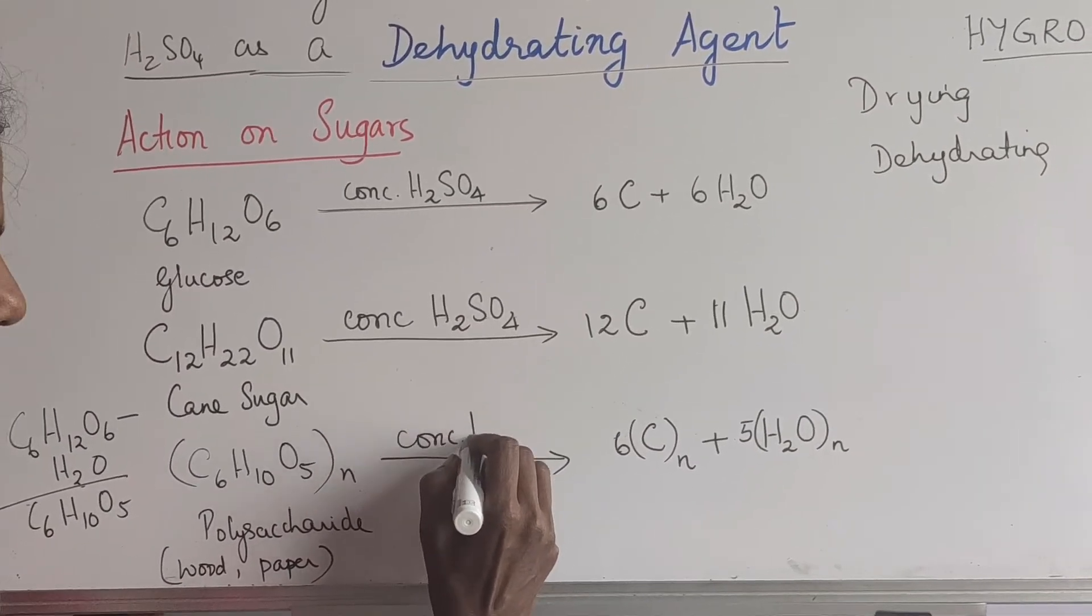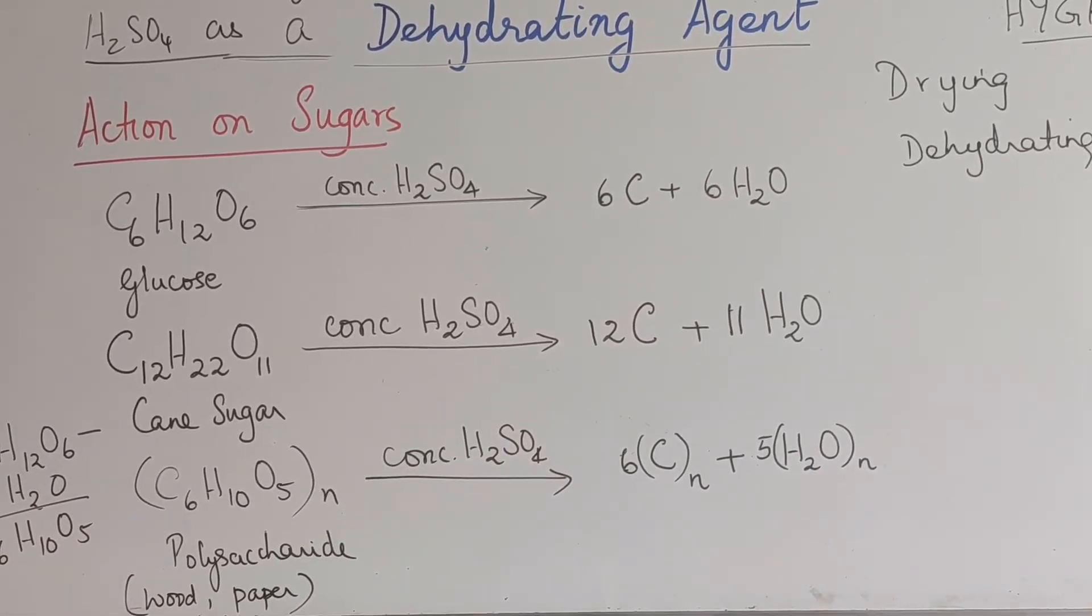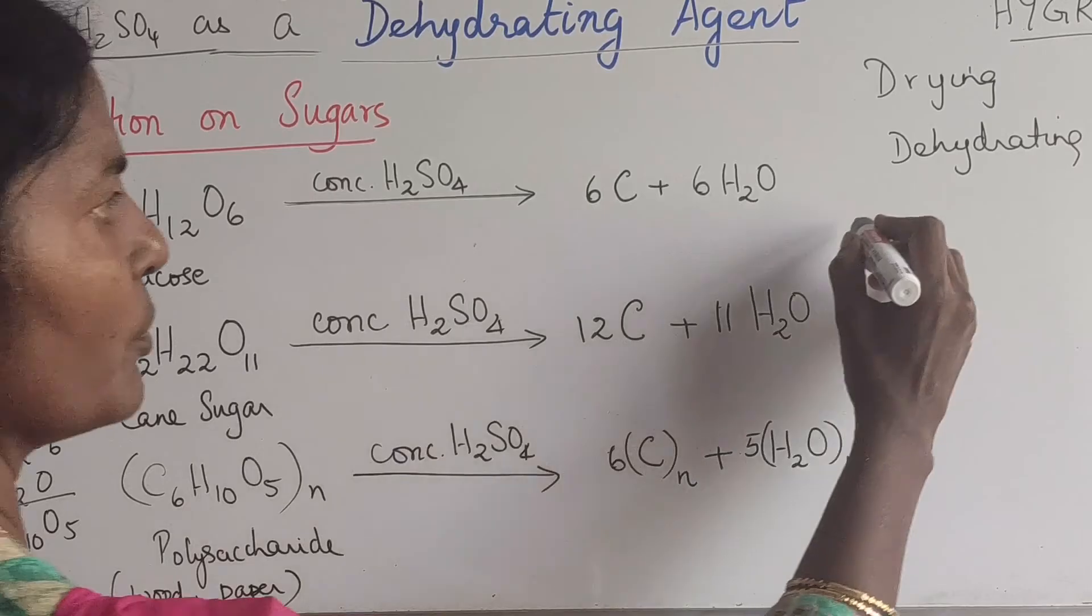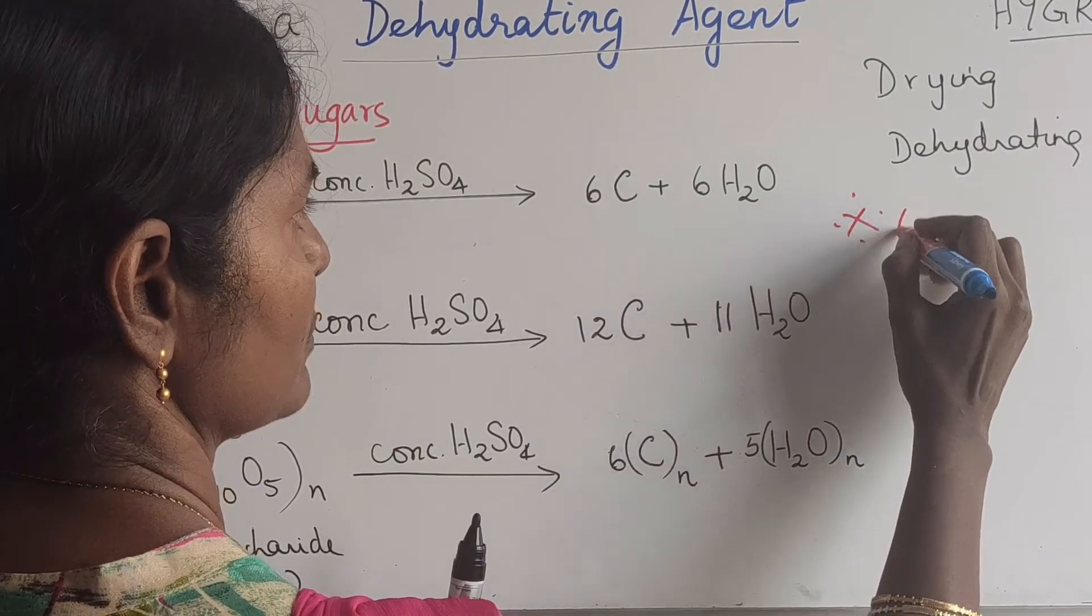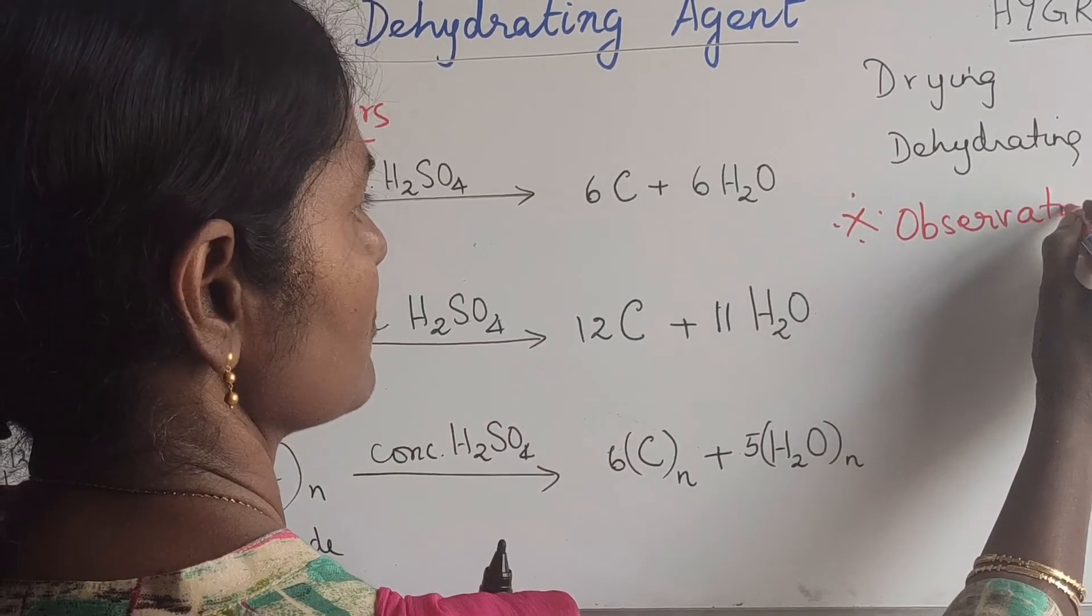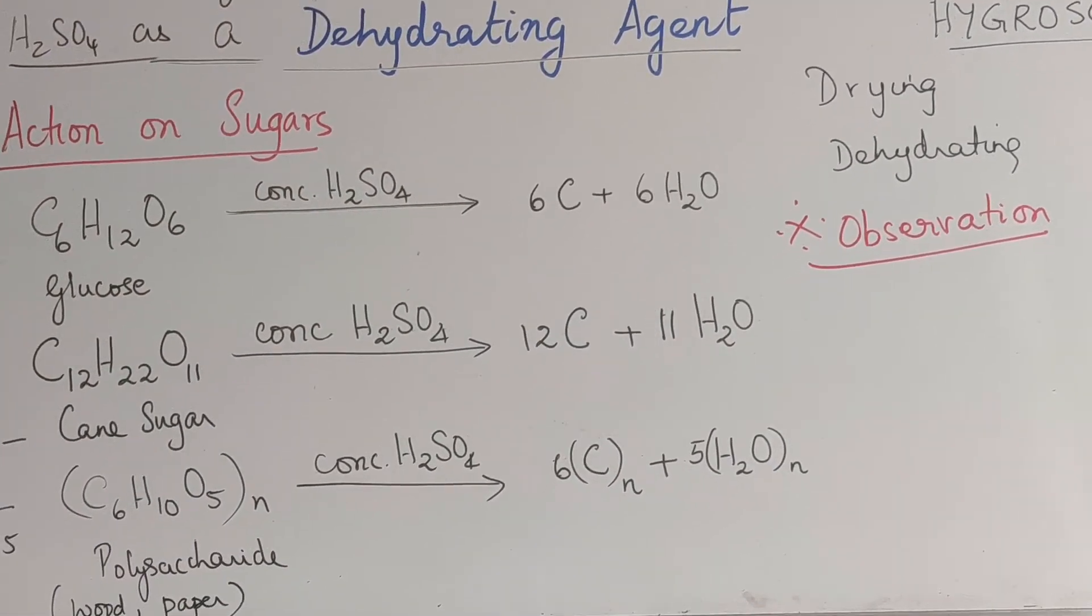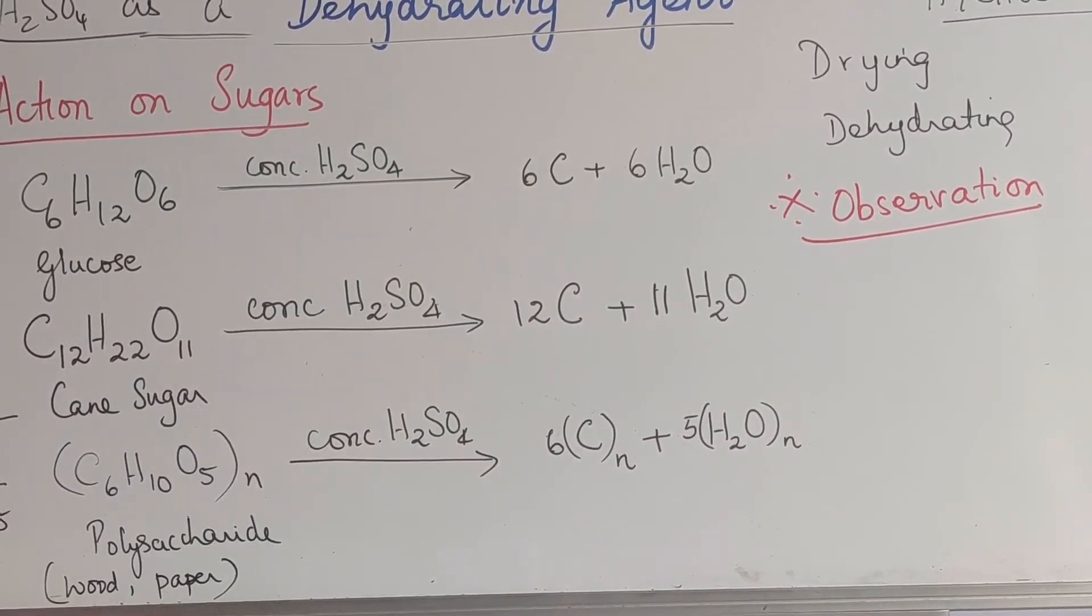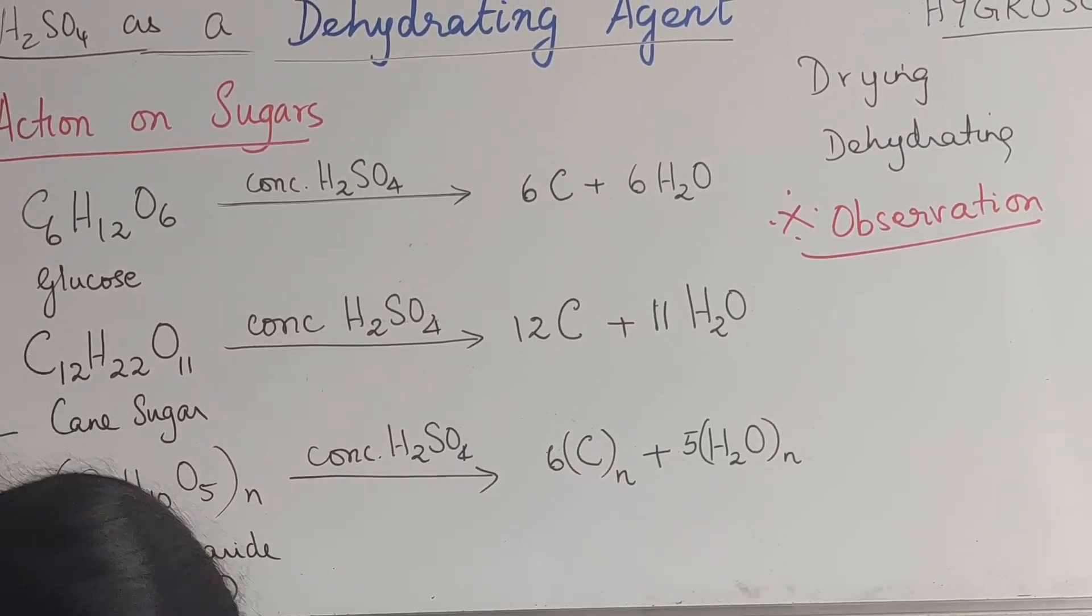These are the dehydrating reactions of sugar. Now there is an important observation that we need to remember. As far as these sugars go, all of them work in the same way. So sugars, basically sugars, crystals or glucose if you take, they are white in color, they are crystalline.